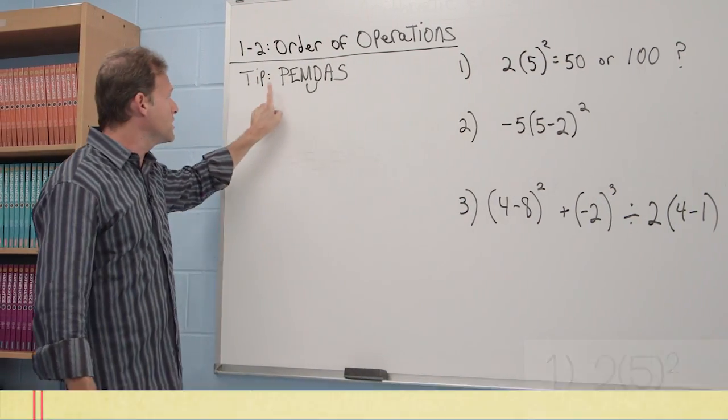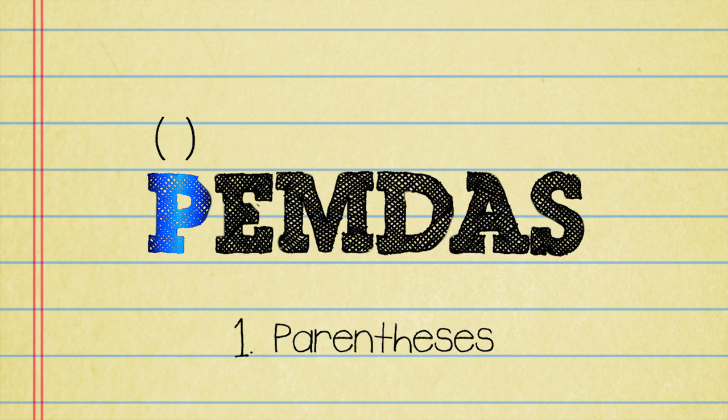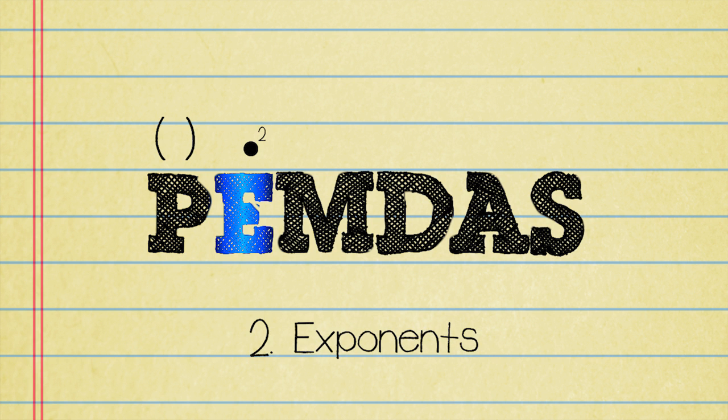So we're going to follow this rule here, PEMDAS. This is an acronym, a little mnemonic device, something to help you remember the order of operations. P stands for parentheses. We do that which is in parentheses first, before we do anything else. Then we go to exponents. Then we deal with the exponents.